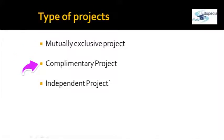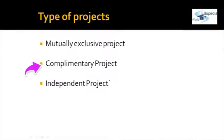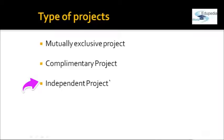Complementary projects are the opposite of mutually exclusive — if you opt for one option, you must go for the other as well. It means accept all projects together or reject all of them. Independent projects are those where the decision on one asset does not affect the decision on another. For example, the decision to buy project A will not affect the decision on project B — that is called an independent project.